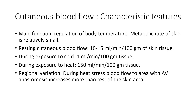Moving to cutaneous circulation: the metabolic rate of the skin is relatively small, so the main function of cutaneous blood flow is regulation of body temperature. Resting cutaneous blood flow is about 10 to 15 ml per minute per 100 grams of skin tissue. Blood vessels in the skin are under hypothalamic control via basal myogenic tone — increased tone produces vasoconstriction, decreased tone produces vasodilation.